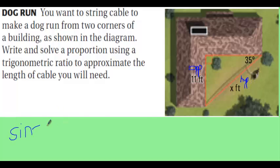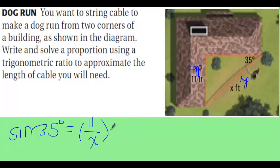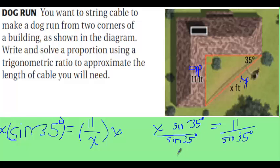So the sine of 35 degrees is going to be equal to the opposite, 11, over the hypotenuse, X. Now it's just a matter of solving for X using algebra — remembering that the sine of 35 degrees is a number like any other number. We multiply both sides by X to get X·sin(35°) = 11, then divide both sides by sin(35°), giving X = 11 over the sine of 35 degrees, which equals approximately 19.2 feet.